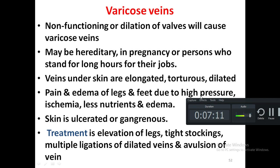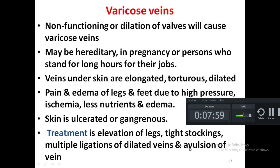The stasis of blood in the leg veins causes ischemia — less blood flow to the tissues of the foot and legs — so there is less supply of nutrients. Since the leg tissues are not getting sufficient nutrients, the skin becomes ulcerated and may become gangrenous. Treatment includes elevating the legs, wearing tight stockings, applying multiple ligatures on the dilated veins, or sometimes avulsion of the vein.